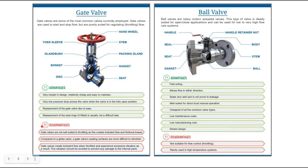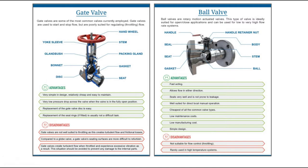Disadvantages of gate valves: they are not well suited for throttling as it creates turbulent flow and frictional losses. Compared to a globe valve, a gate valve's seating surfaces are more difficult to refurbish. Gate valves create turbulent flow when throttled and experience excessive vibration as a result. This situation should be avoided to prevent damage to the internal parts. The replacement of seat rings, if fitted, is usually not a difficult task.